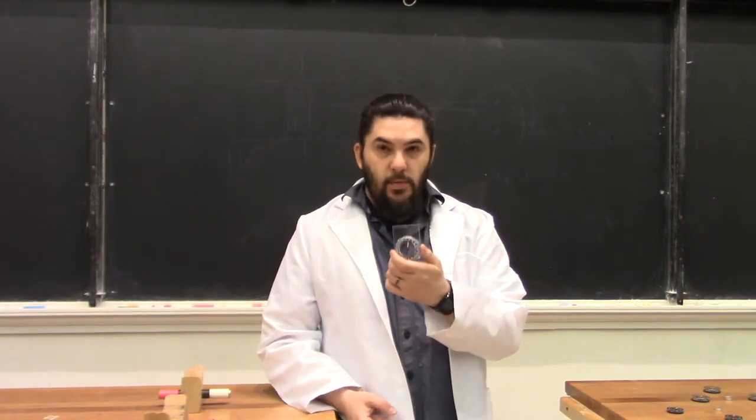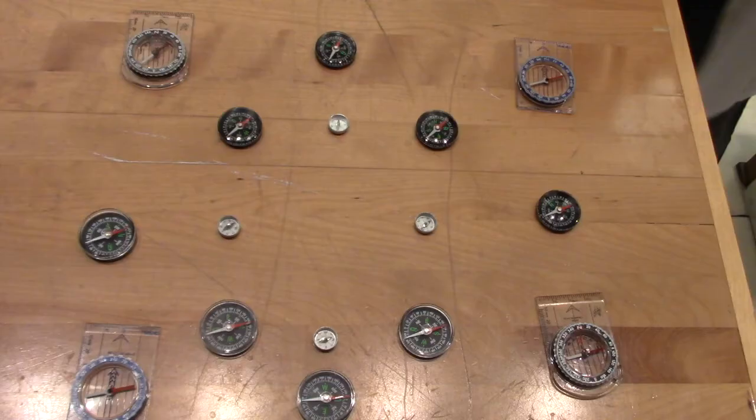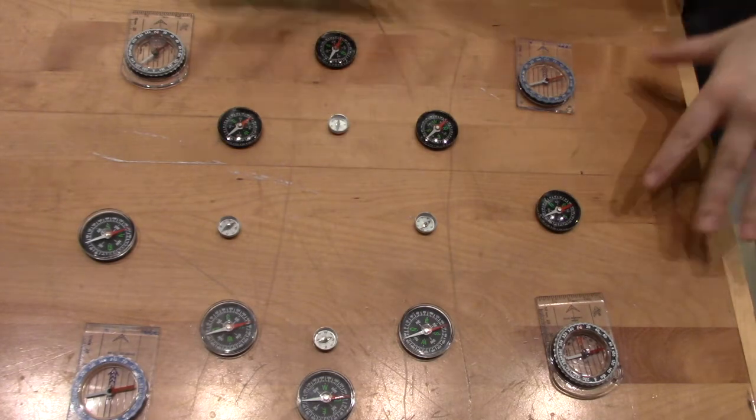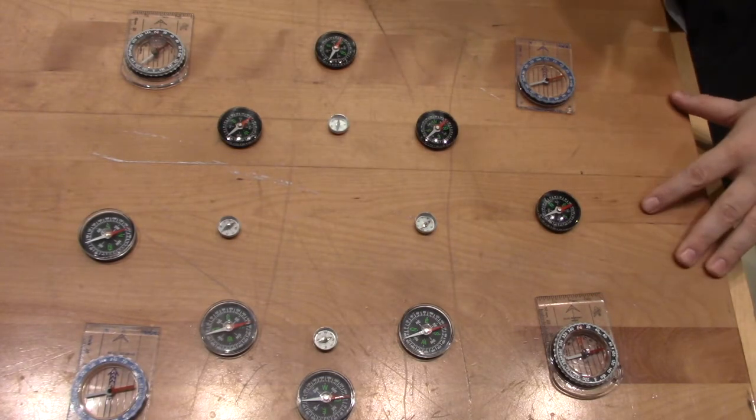Compasses, too, can be looked at as dipole magnets. The Earth's magnetic field is also a giant dipole field, and all these compasses are going to want to align with it.